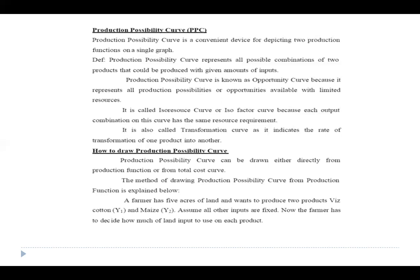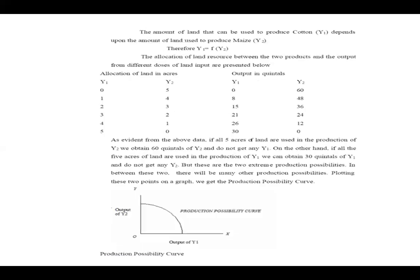The production possibility curve can be drawn either directly from the production function or from the total cost curve. For example, a farmer has five acres of land and wants to produce two products: cotton (y1) and maize (y2), assuming all other inputs are fixed. The farmer has to decide how much land to allocate to each product. The amount of land used to produce cotton (y1) depends upon the amount of land used to produce maize (y2).